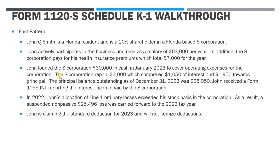During the year, John loaned the S Corp $30,000 in cash to cover some operating expenses. During the year, the S Corporation repaid $3,000 in cash, which comprised $1,050 of interest and $1,950 in principal. The principal balance at the end of the year was $28,050, and John received a 1099-INT reporting the interest income the S Corp paid him on the note.